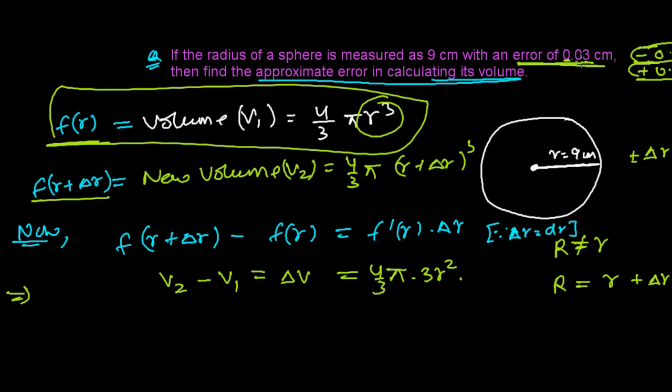How much error we made? That's 0.03, so it's 0.03. And it is multiplication everywhere, keep in mind. So now V₂ - V₁, the change in volume, the approximate change in volume.